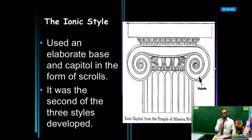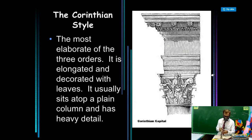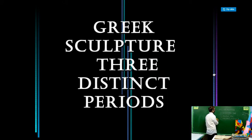The Ionic was the second of the three styles developed during the Greek period. The third is the Corinthian style — the most elaborate among the three orders. It is composed of leaves, flowers, and acanthus, with a very detailed decorative capital.